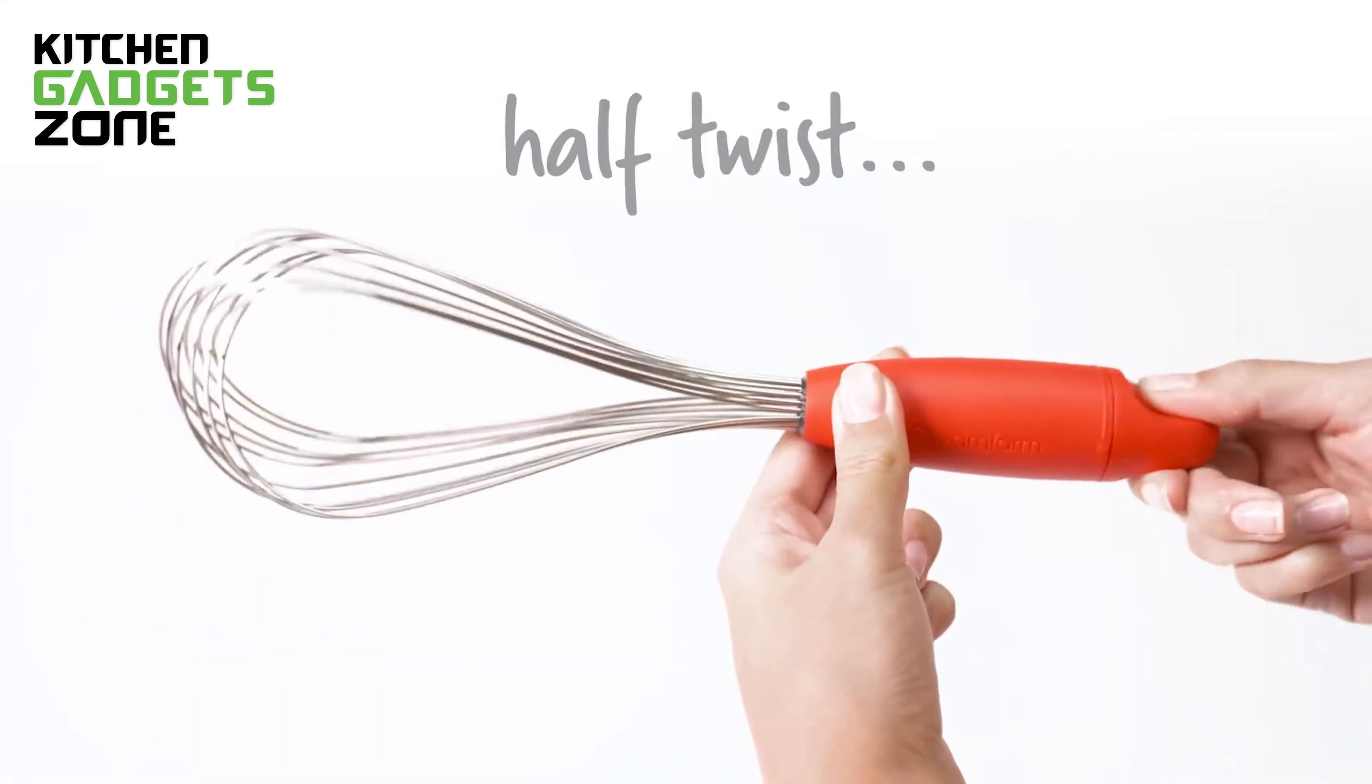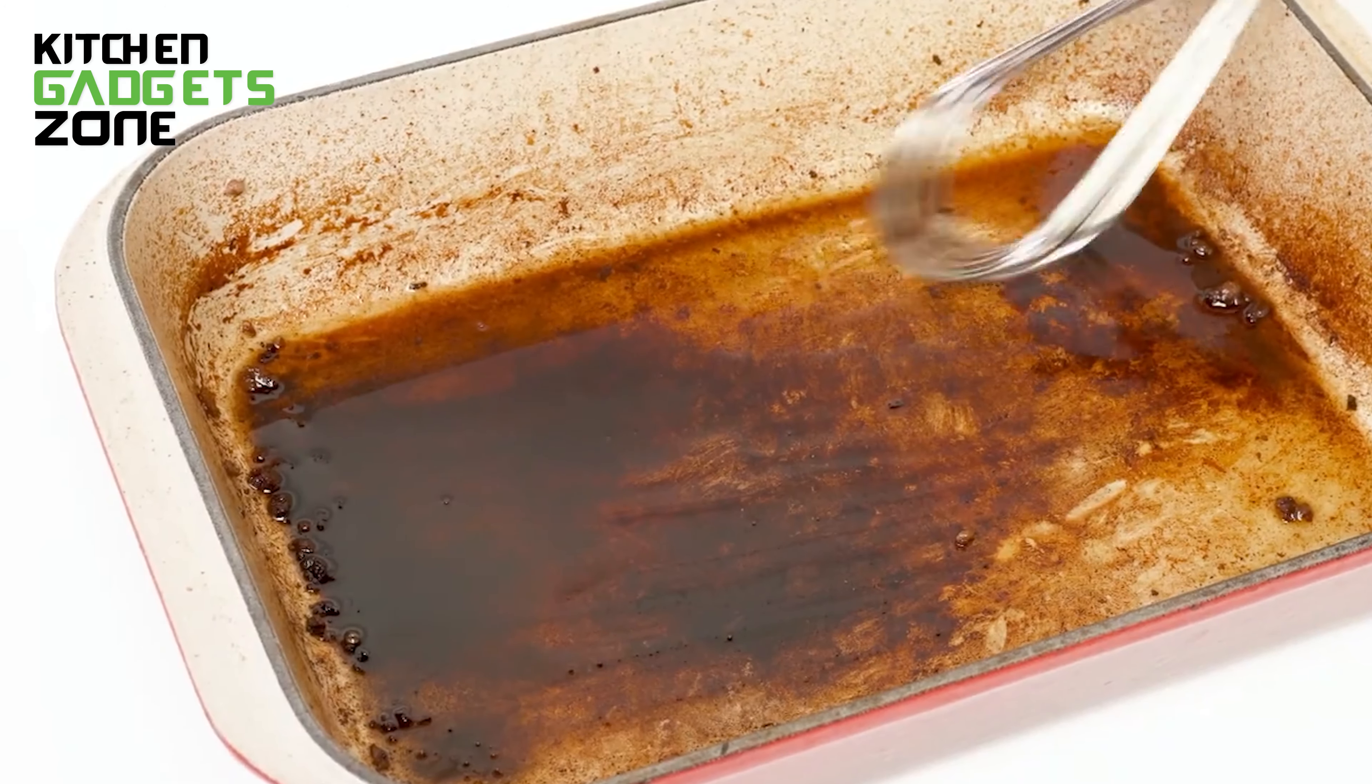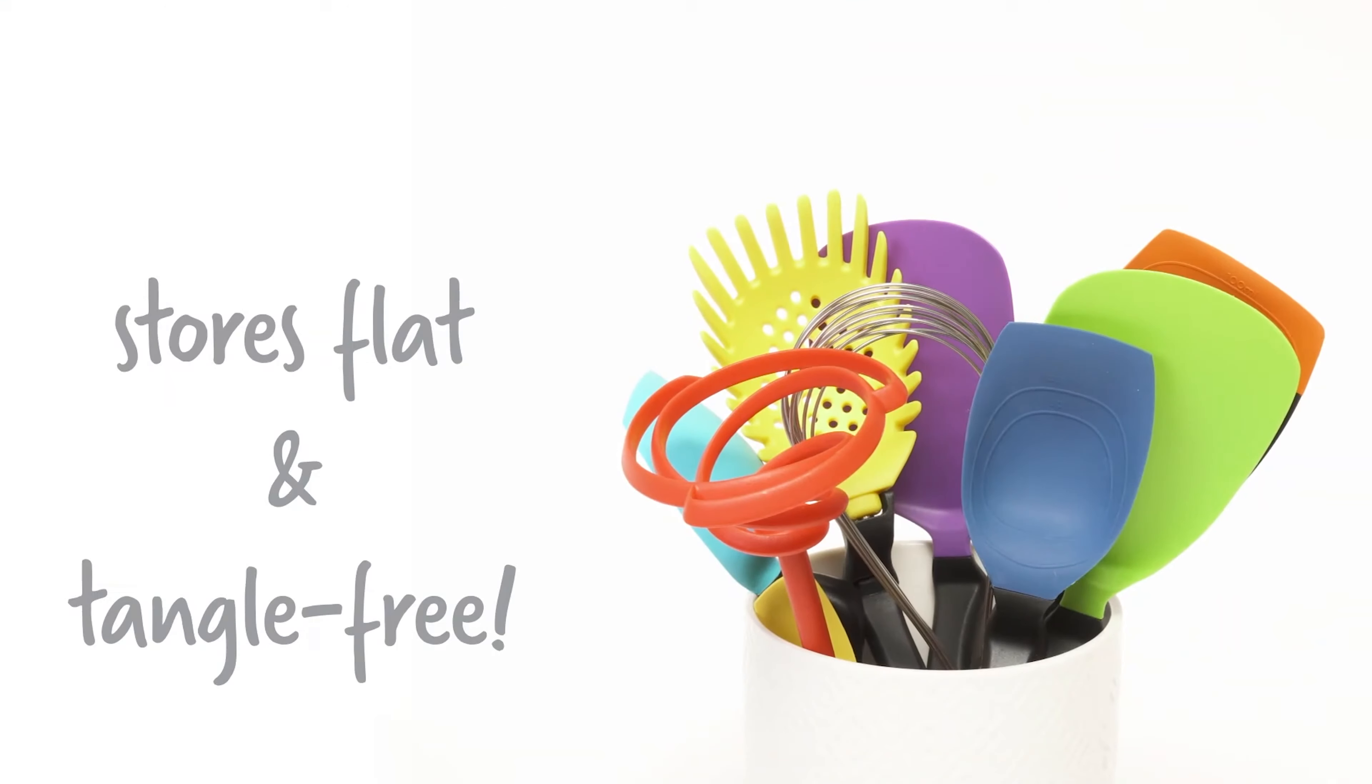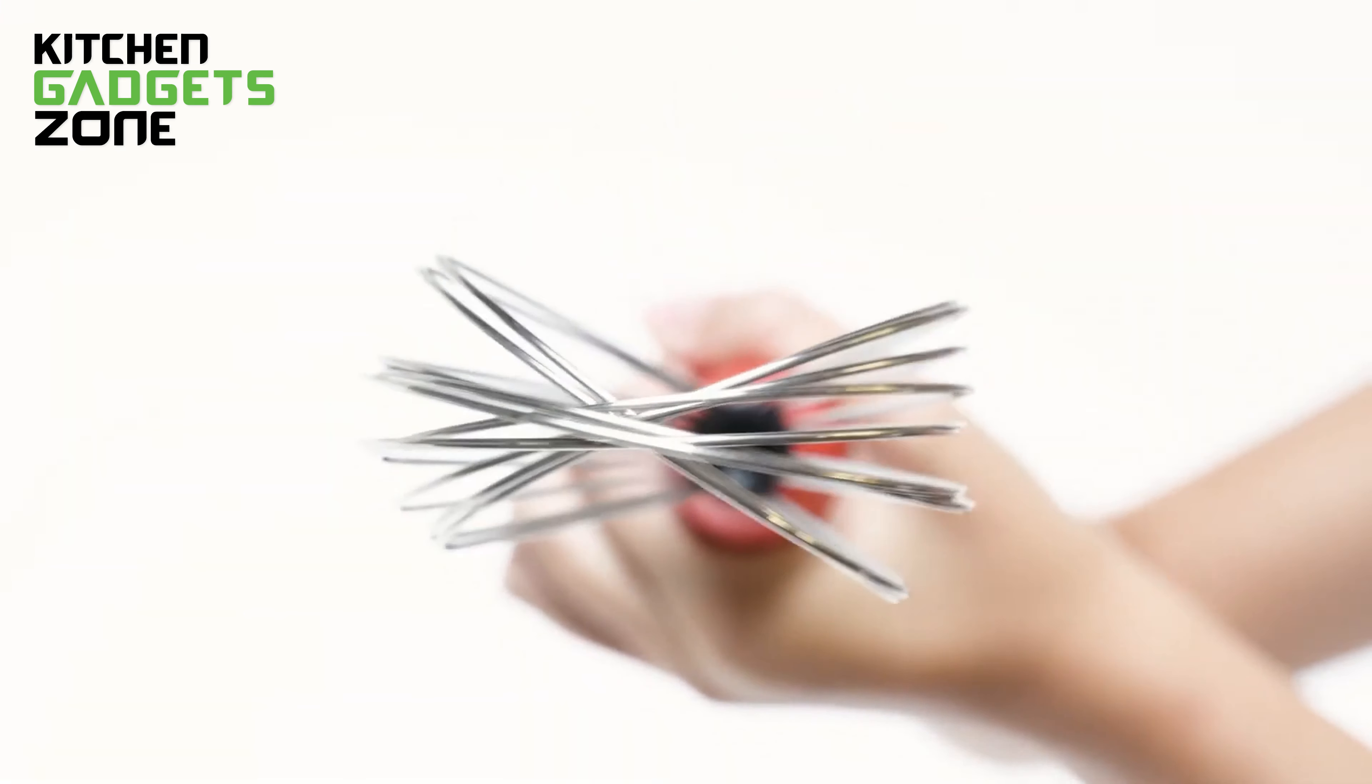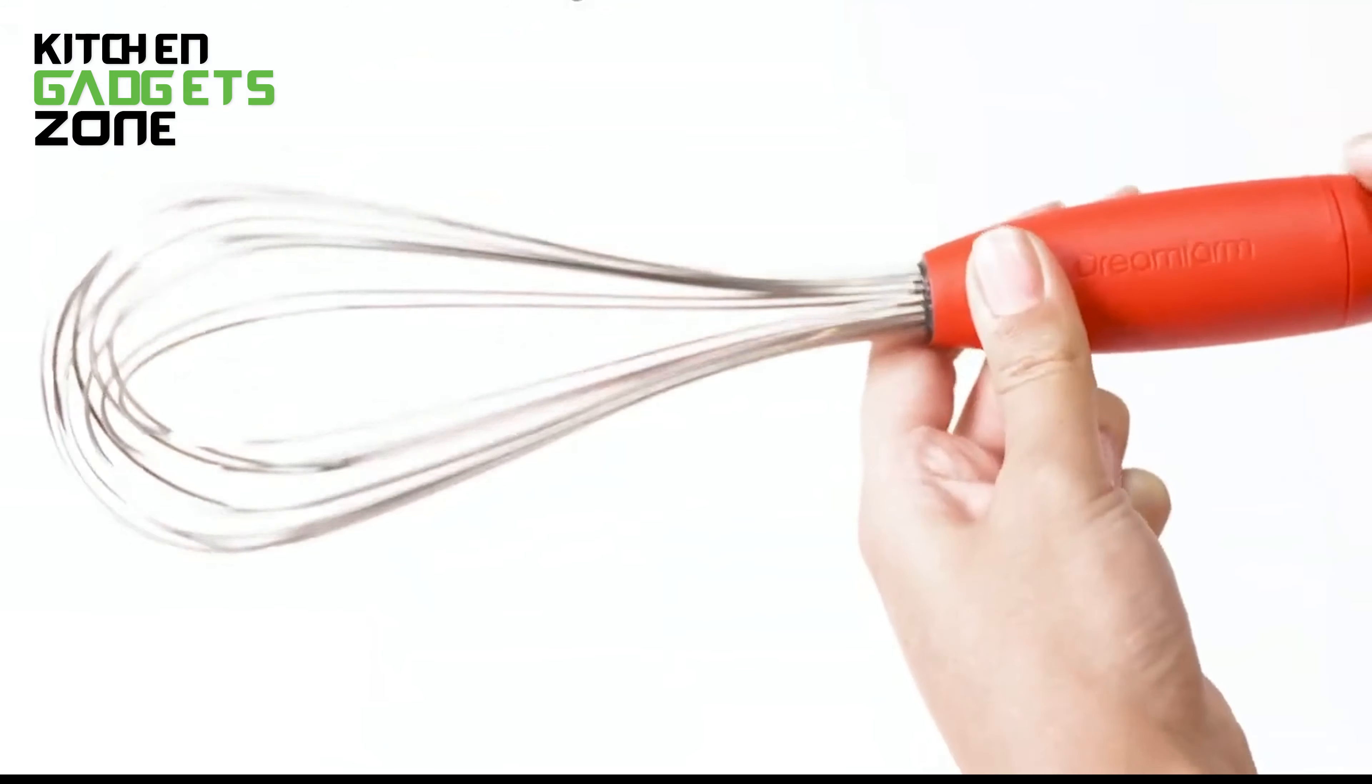With a simple half-turn of the ergonomic handle, the 10 high-vibration spring steel wires transform into the perfect tool for any whisking task. Flisk folds completely flat for space-saving storage and easy cleaning in the dishwasher. No more tangled messes or disassembling required. From whipped cream to deglazing pans, the Flisk Whisk has got you covered.